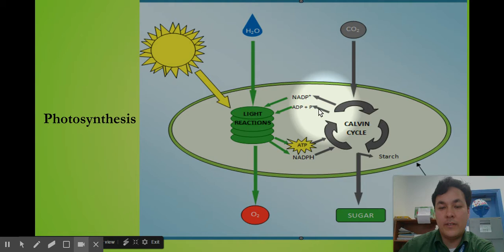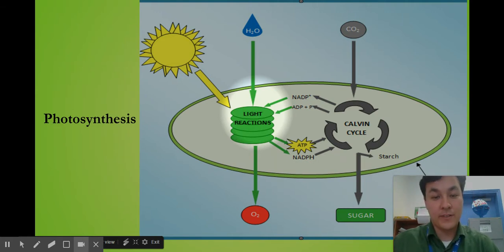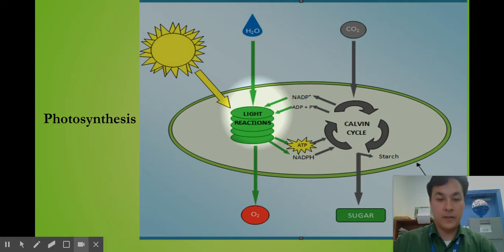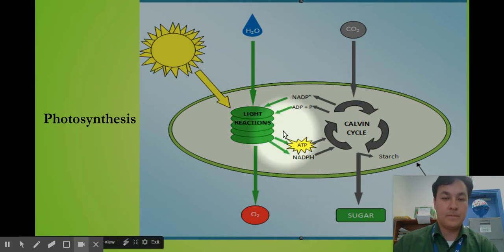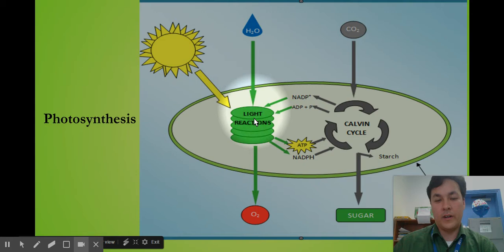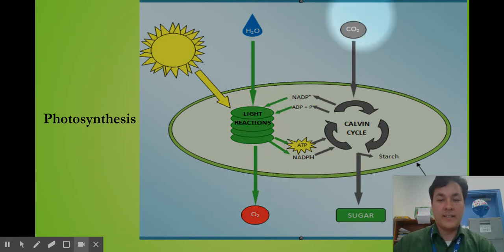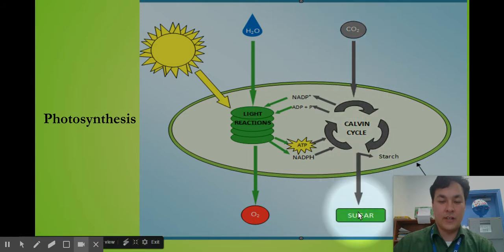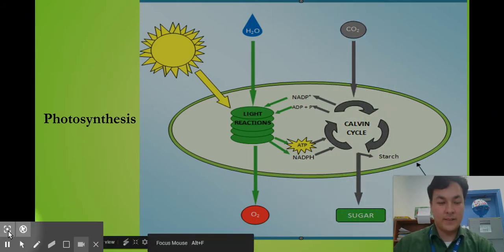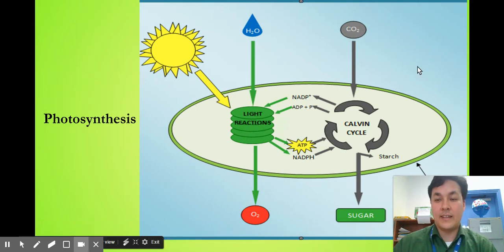The Calvin cycle is going to give off NADP⁺ and ADP. Notice once again, just like photosynthesis and cellular respiration, the products of one are the reactants of the other. Water is coming into the plant; oxygen is going out. Carbon dioxide is going into the plant and sugars are coming out. So let's dig a little deeper into the light reactions and the Calvin cycle.